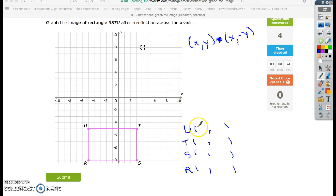So for U, the coordinates are negative 5, negative 5. For T, the coordinates are 3, negative 5.